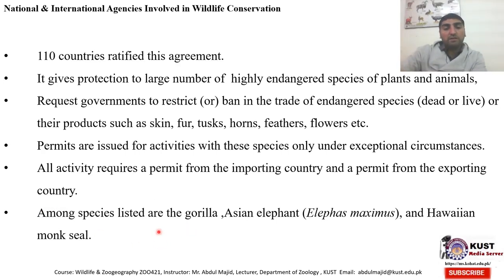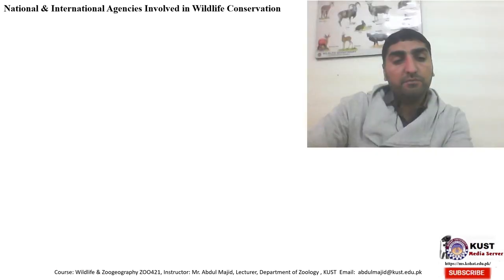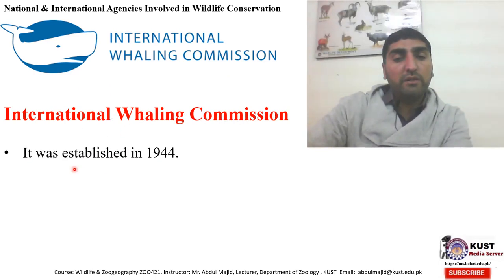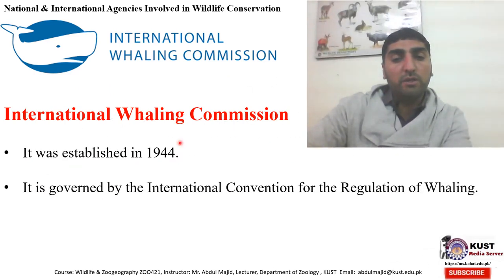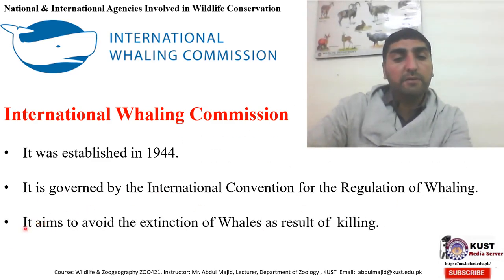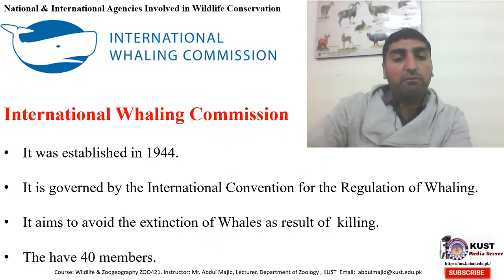Among the species listed under CITES are the gorilla, Asian elephant (Elephas maximus), and the Hawaiian monk seal. Another commission is the International Whaling Commission (IWC), established in 1944 after the brutal killing of whales. It is governed by the International Convention for the Regulation of Whaling, and its aim is to avoid the extinction of whales as a result of their extensive killing.